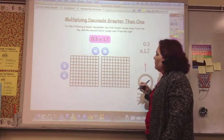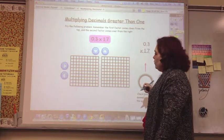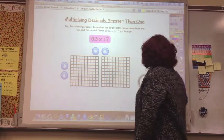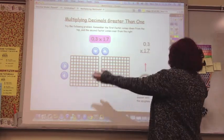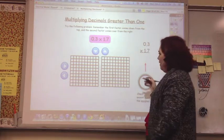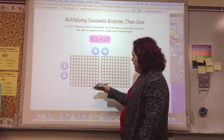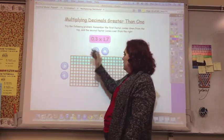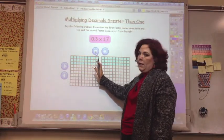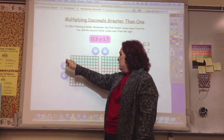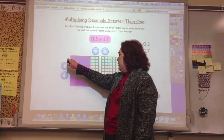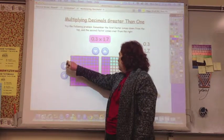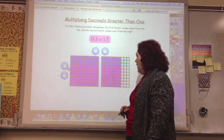So decimals, multiplying decimals greater than one. So this time we're going to show 3 tenths. And since these are going this way, we're going to have to shade down this way. So that's 3 tenths. And then we went 1 and 7 tenths. So whole one and then 7 more tenths. So we come all the way across.